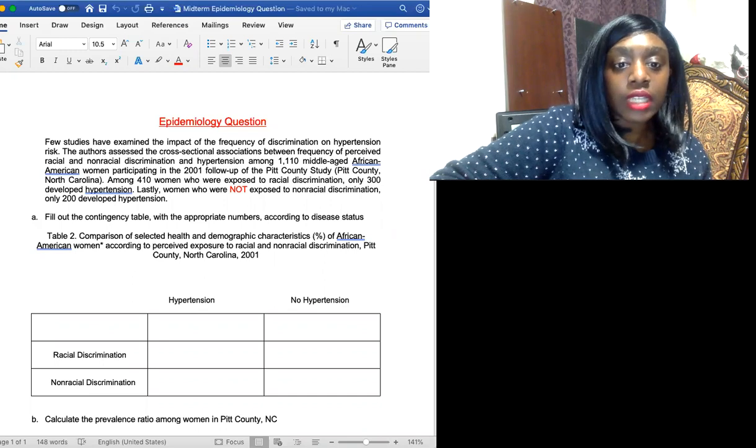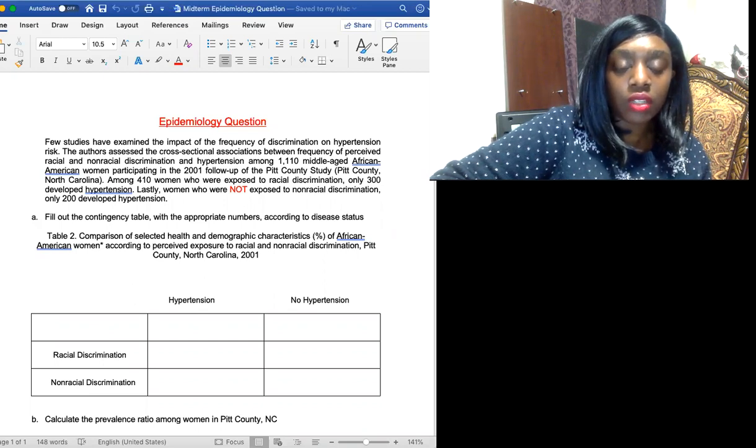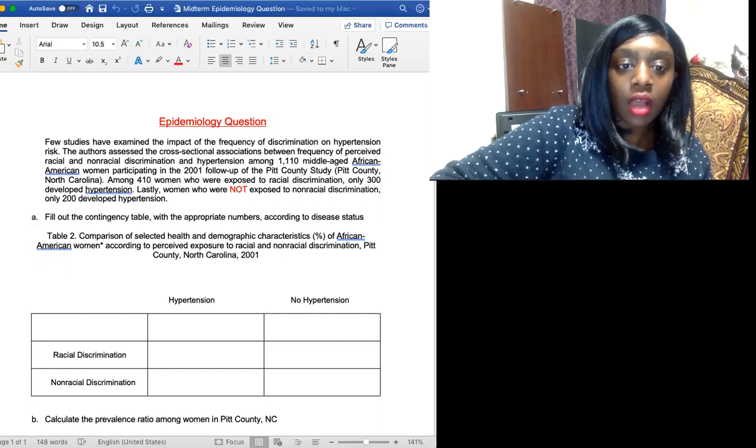Few studies have examined the impact of the frequency of discrimination on hypertension risk. The authors assessed the cross-sectional associations between frequency of perceived racial and non-racial discrimination and hypertension among 1,110 middle-aged African-American women participating in the 2001 follow-up of the Pitt County study. Among 410 women who are exposed to racial discrimination, only 300 develop hypertension.